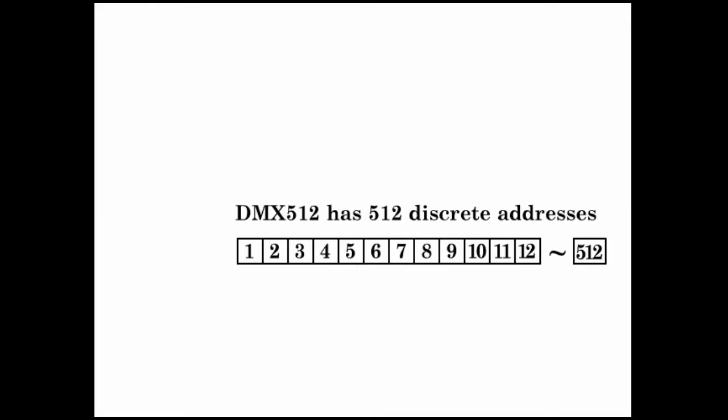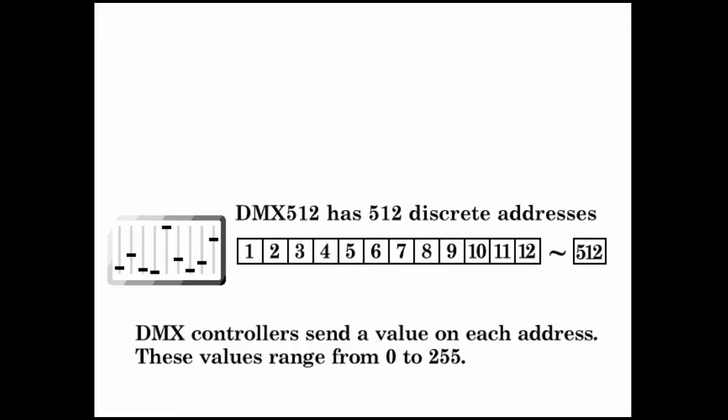Welcome to the DMX 512 basic tutorial. DMX 512 has 512 discrete addresses. DMX controllers send a value on each address. These values range from 0 to 255.